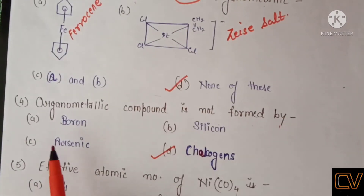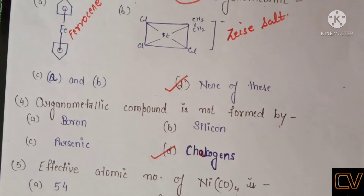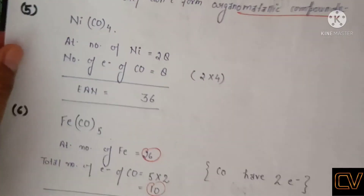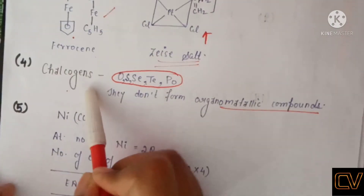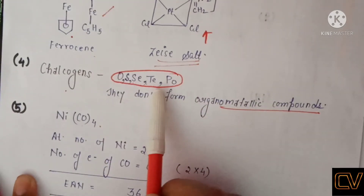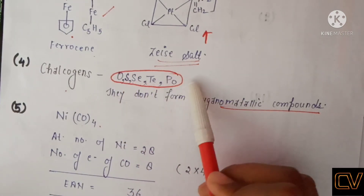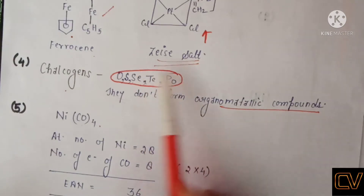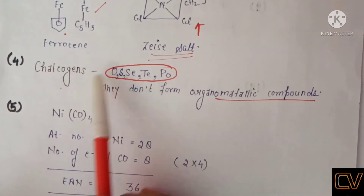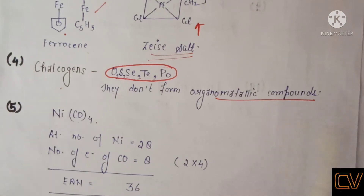Question number 4 asks: organometallic compounds are NOT formed by which elements? Friends, remember this point — chalcogens do not form organometallic compounds. Chalcogens include oxygen, sulfur, selenium, and tellurium. You should remember all these atoms as chalcogens. Chalcogens never form organometallic compounds.